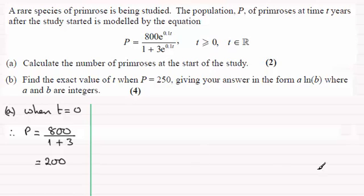Now as we move on to part b, what we've got to do is find the exact value of t when P equals 250 and give our answer in the form A times the natural log of b. So for this one when P equals 250, substitute it in, rearrange the equation and see if we can solve for t.